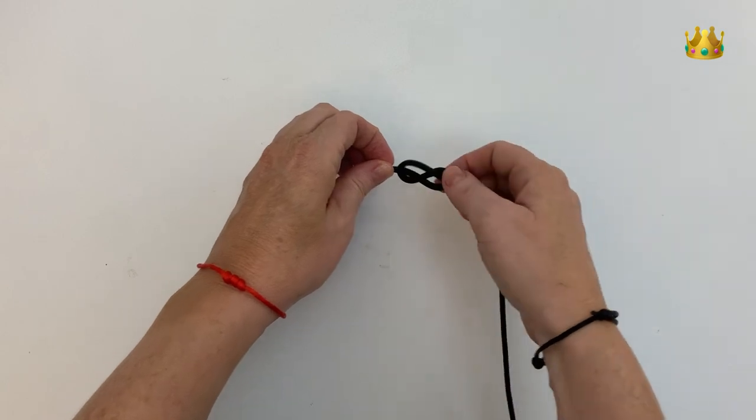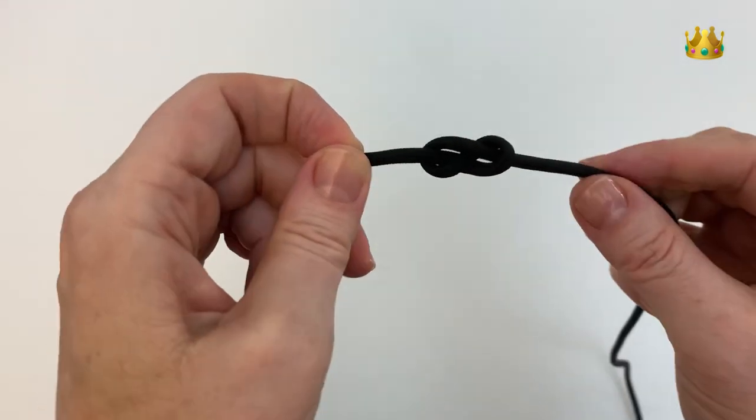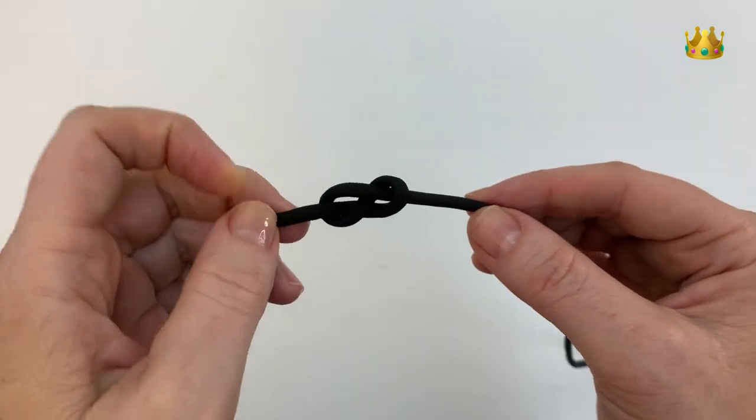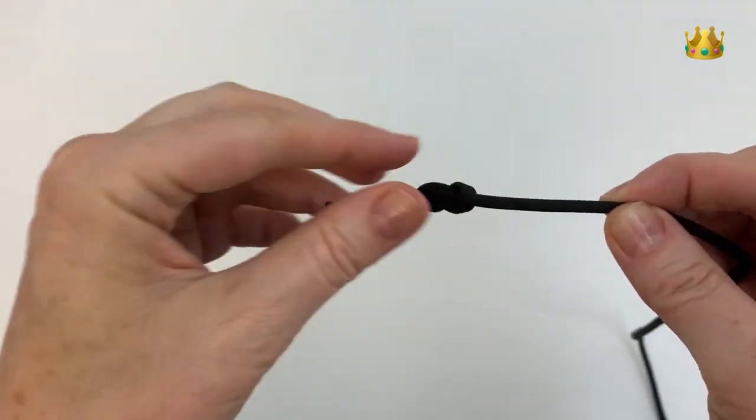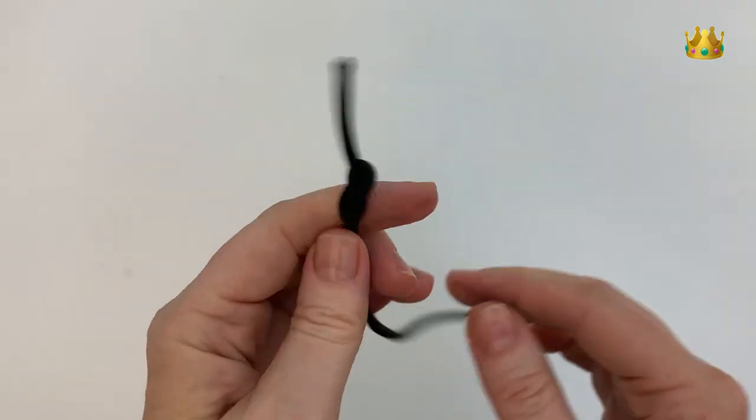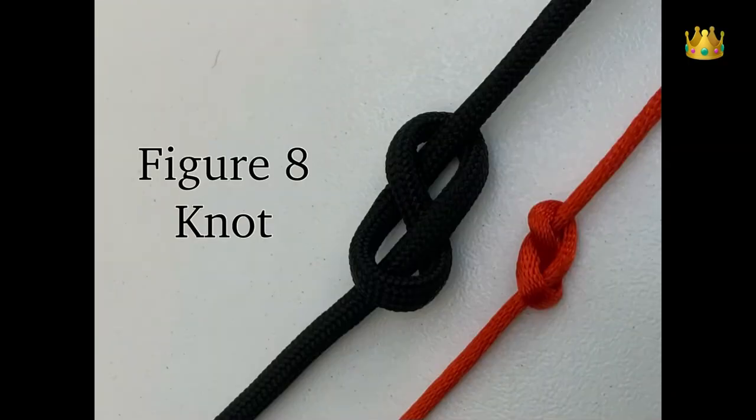Then you can pull your figure 8 knot nice and tight and it should be quite close to the end. You can always re-tie your knot if you need to, but if you're happy with it pull it nice and tight and then you can use it as a stopper knot at the end of your cord.